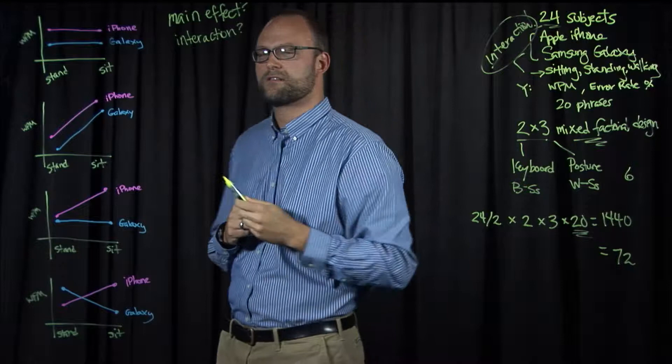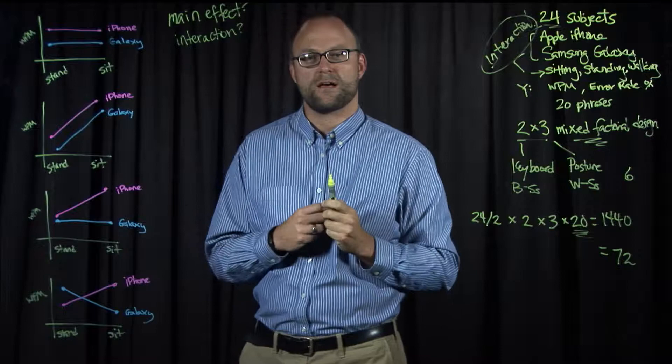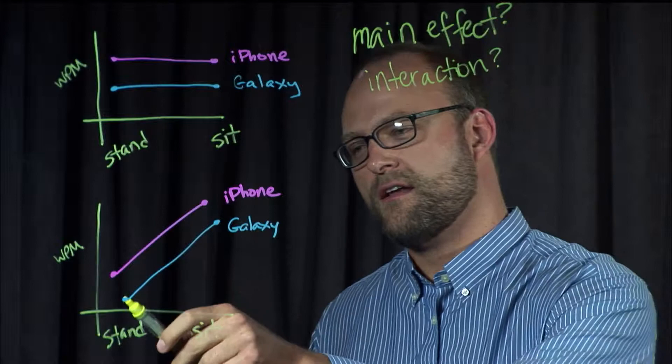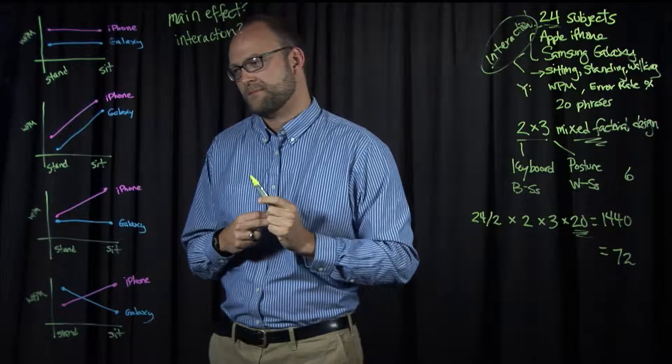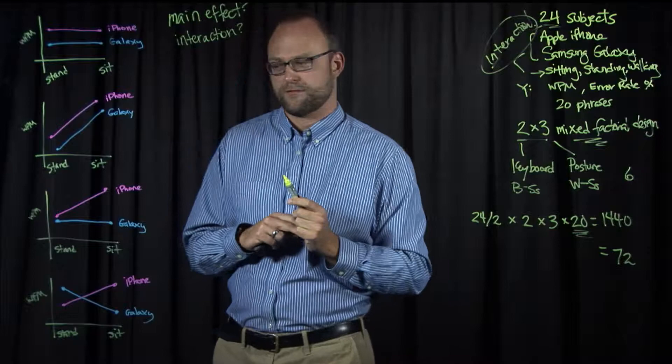Okay, let's consider the next graph. Here we see that the lines are sloped and still parallel. What does that mean? Is there a main effect of keyboard? Well, again, in both conditions, we see the iPhone seems to be faster than the Galaxy. So we'd say yes, there's a main effect of keyboard. Is there a main effect of posture?